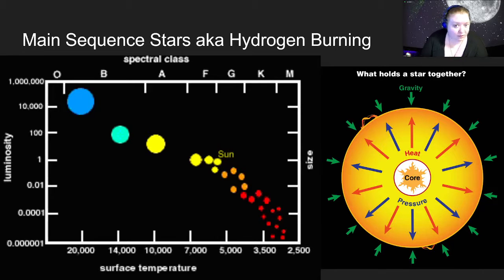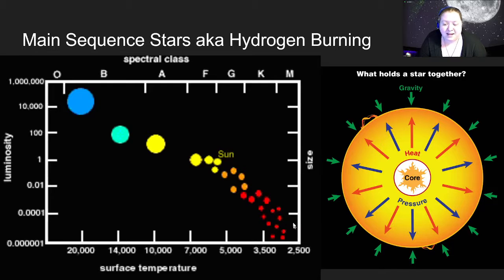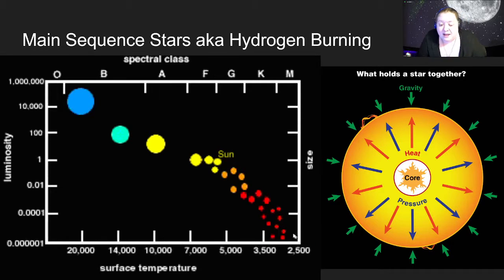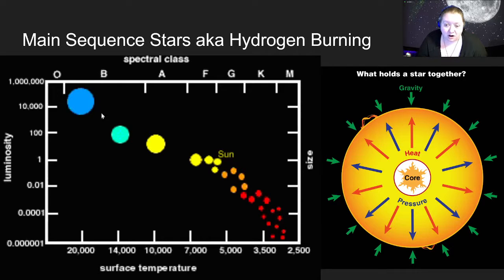Stars in this main-sequence phase come in a variety of sizes and colors. We have very small main-sequence stars that are much cooler — the lowest mass, the smallest, and red in color because they're so cool. As main-sequence stars get bigger in mass, they also get bigger in radius and diameter, they get hotter, and they get brighter, all the way up to the biggest stars on the main sequence, which are the most massive, the brightest, and the hottest, shining a brilliant blue because of how hot they are.